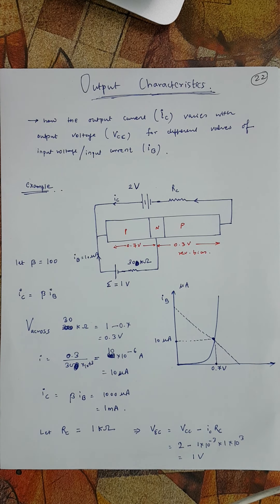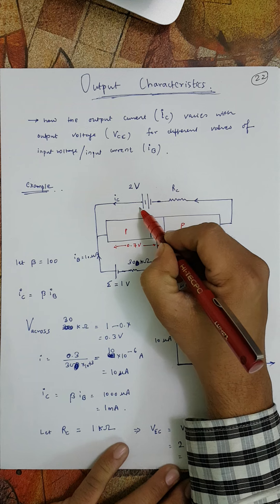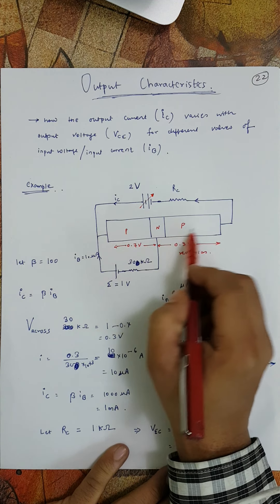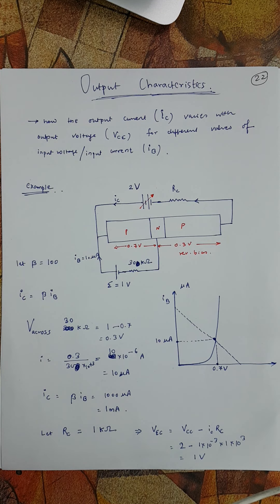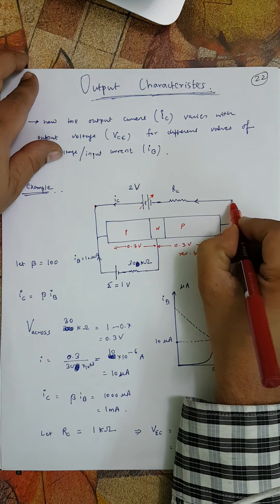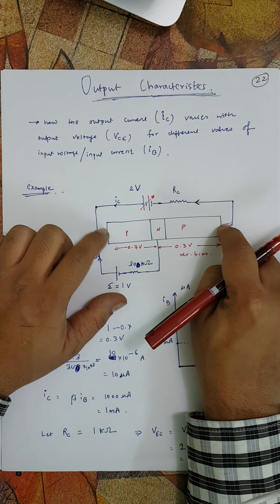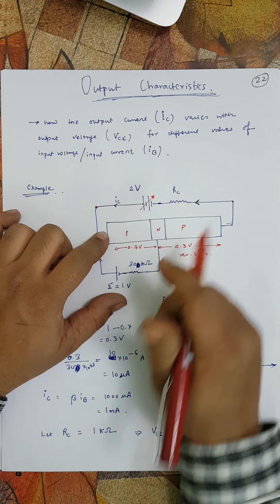Let's start with the output characteristics of a PNP transistor in common emitter mode. We are going to study it with the help of an example and understand the role of the battery in changing IC. Output characteristic is a relationship between the output current and the output voltage — how the output current varies as the output voltage changes. The output voltage is the voltage across the emitter and collector, and the output current is IC.